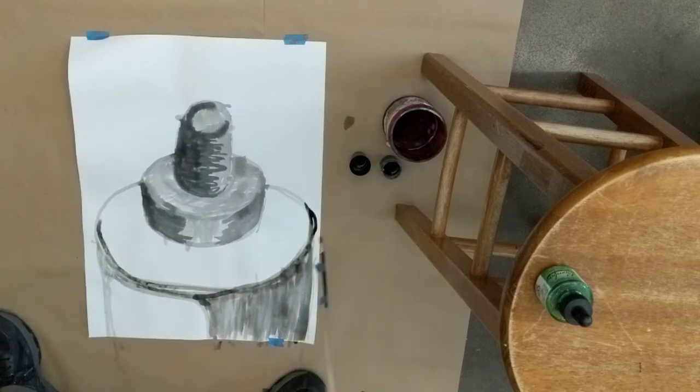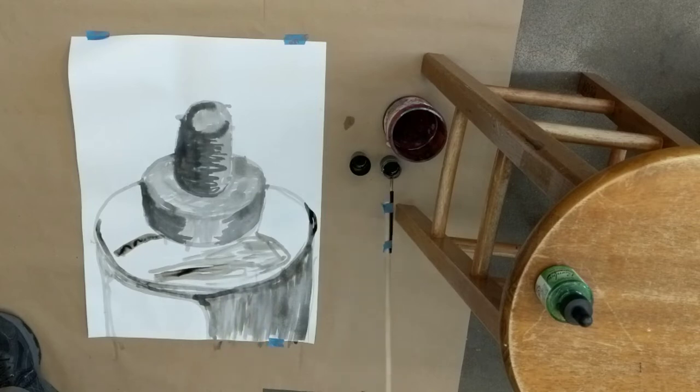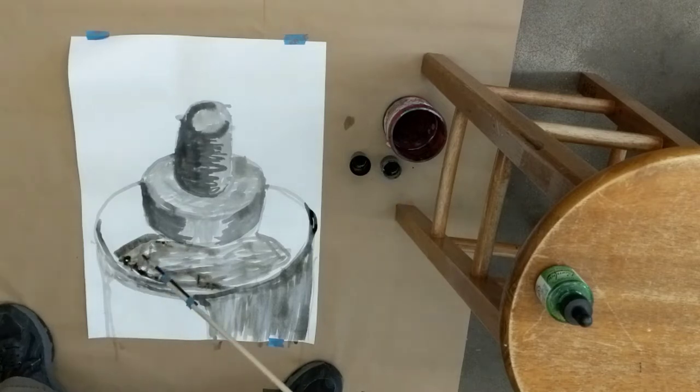I don't want to start out too dark because obviously anything I put down that's too dark, I can't really cover up. So most of my marks were made with the real watered down ink. And then as I got towards the end, I started adding more and more pure black ink.